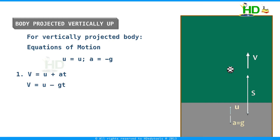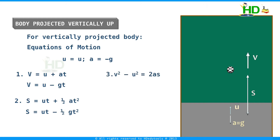Another equation gives the displacement after t seconds: s equal to ut minus half g t squared. And the equation v squared minus u squared equal to 2as becomes v squared minus u squared equal to minus 2gs, giving the relation between initial velocity, final velocity, acceleration, and displacement.